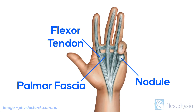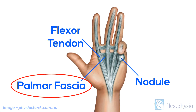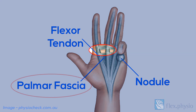Dupuytren's disease is a genetic condition which affects the palmar fascia. This is a tough layer of connective tissue which sits under the skin of the palm to reinforce and stabilize it when we grip. People with Dupuytren's disease notice the very gradual development of thickening in parts of the palm, most often towards the top of the palm over the big knuckles.